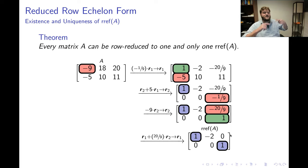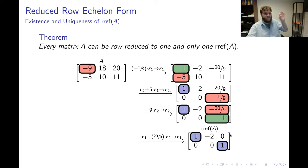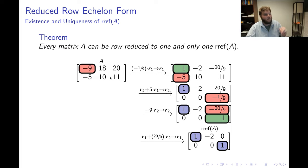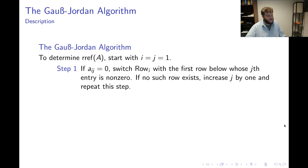I did row operations and intelligently chose them to end up with reduced row echelon form. According to the theorem, this is the only reduced row echelon form I'll ever produce by conducting elementary row operations on this matrix. If our original matrix was called A, the reduced row echelon form we've produced is RREF(A).